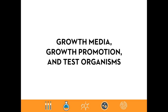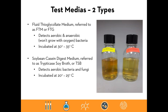For USP 71 sterility testing, two media are required. Fluid thioglycolate media, referred to as FTM or FTG, detects aerobic and anaerobic bacteria — anaerobic organisms will not grow in the presence of oxygen. There are thousands of bacterial species that won't grow in oxygen, and FTG medium should detect them. The other required media is soybean casein digest, referred to as TSB, which detects aerobic bacteria and will also grow fungal organisms if present in a sample.